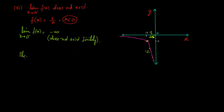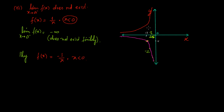Similarly, we can take another example: f(x) = -1/x where x is less than zero. In that case we will have a similar type of graph but on the upper side. There will be an abrupt rise at zero, and hence the limit as x approaches zero from the negative side of f(x) will be equal to positive infinity, and hence will not exist finitely.